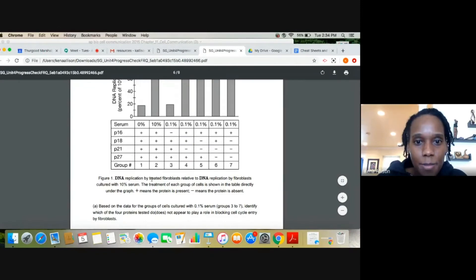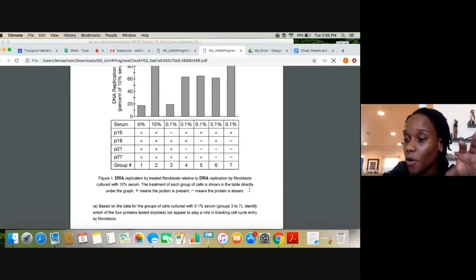All right, so it says DNA replication by treated fibroblasts relative to DNA replication by fibroblasts cultured in 10% serum. The treatment of each group of cells is shown in the table directly under the graph. A positive means that the protein is present, a negative means the protein is absent. So if the protein is present, then that means it's going to stop the CDK, and that means it's going to stop DNA from replicating.